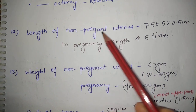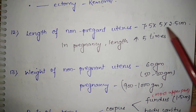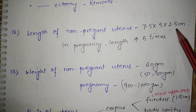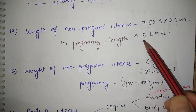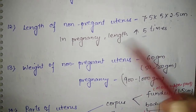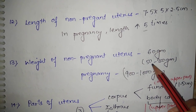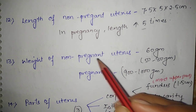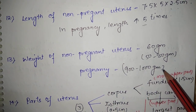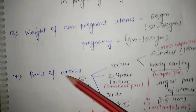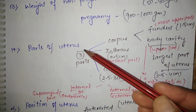The length of a non-pregnant uterus is 7.5 x 5 x 2.5 cm, whereas during pregnancy the length increases 5 times. The weight of a non-pregnant uterus is 60 grams on average (50 to 80 grams), and during pregnancy the weight increases up to 1 kg. The uterus is divided into 3 parts.